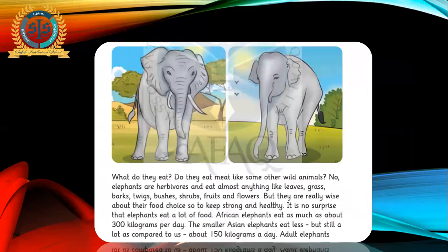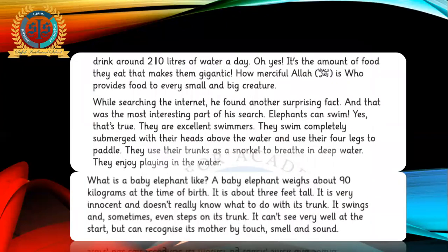Then in this paragraph, we are studying the eating habits of an elephant — what an elephant eats. It eats grass, leaves, bark, twigs, bushes, shrubs, fruits, flowers and all sorts of green plants because it is a herbivore. It also tells how much an elephant can eat: 300 kilograms per day, and that is too much. Then in the next paragraph, it provides information about elephants that they can swim — submerged, meaning completely underwater, and they paddle with their legs.